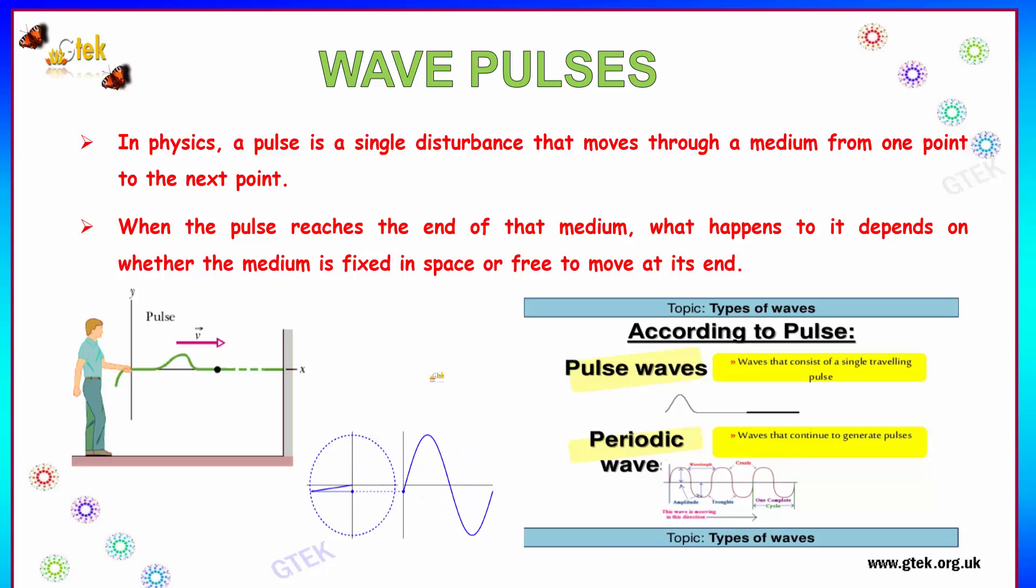Let's talk about wave pulses. In physics, a pulse is a single disturbance that moves through a medium from one point to the next point. When the pulse reaches the end of that medium, what happens? It actually depends on whether the medium is fixed in space or free to move at its end.